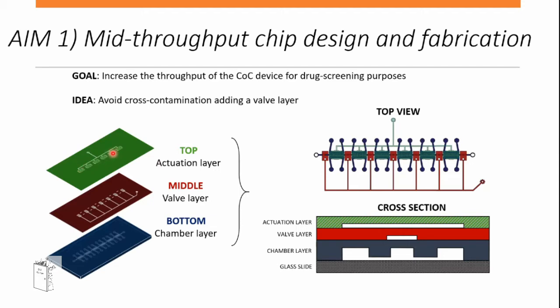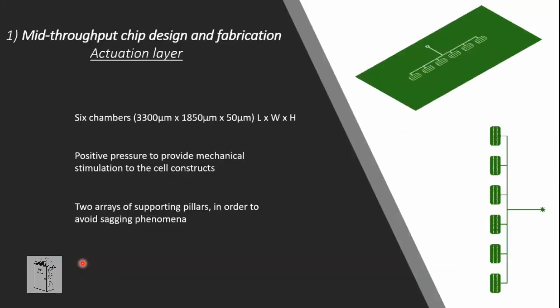The first layer is the top actuation layer, which provides mechanical stimulation to induce osteoarthritis traits. The middle layer is the valve layer, preventing cross-contamination. Finally, at the bottom in blue, is the chamber layer where cells are seeded within the chip.